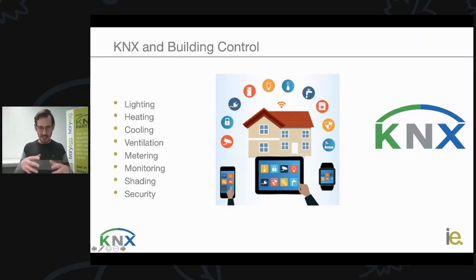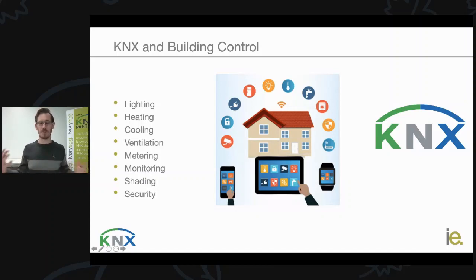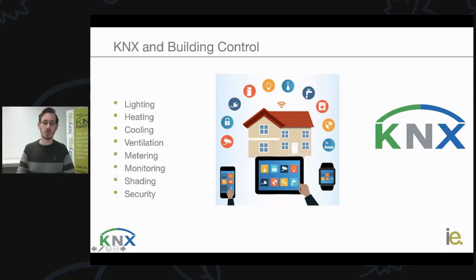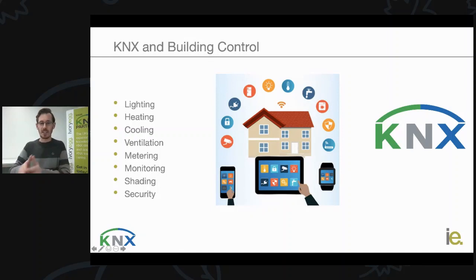It could be the heating control — all of these different things exist in a home. What we're doing when we bring in a control system is enabling simpler control, enabling more intelligent control, enabling all the different parts of the building to be controlled as one so the building is more responsive to your needs. It could be pushing a keypad button when you leave the home to shut down everything and save energy, or setting a lighting scene across multiple circuits to create a nice ambient environment, or having one simple interface to control everything.